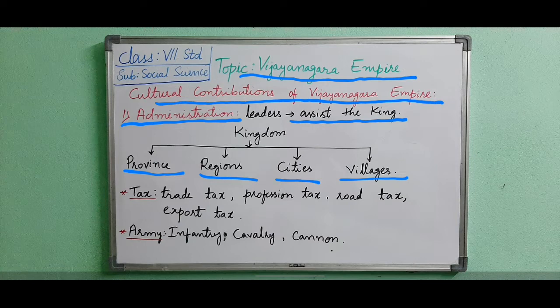The kingship was hereditary. At the time of Vijayanagara, kingship was in the form of hereditary — hereditary means after the father, his elder son becomes the king. In the judicial system, the king held the most power.